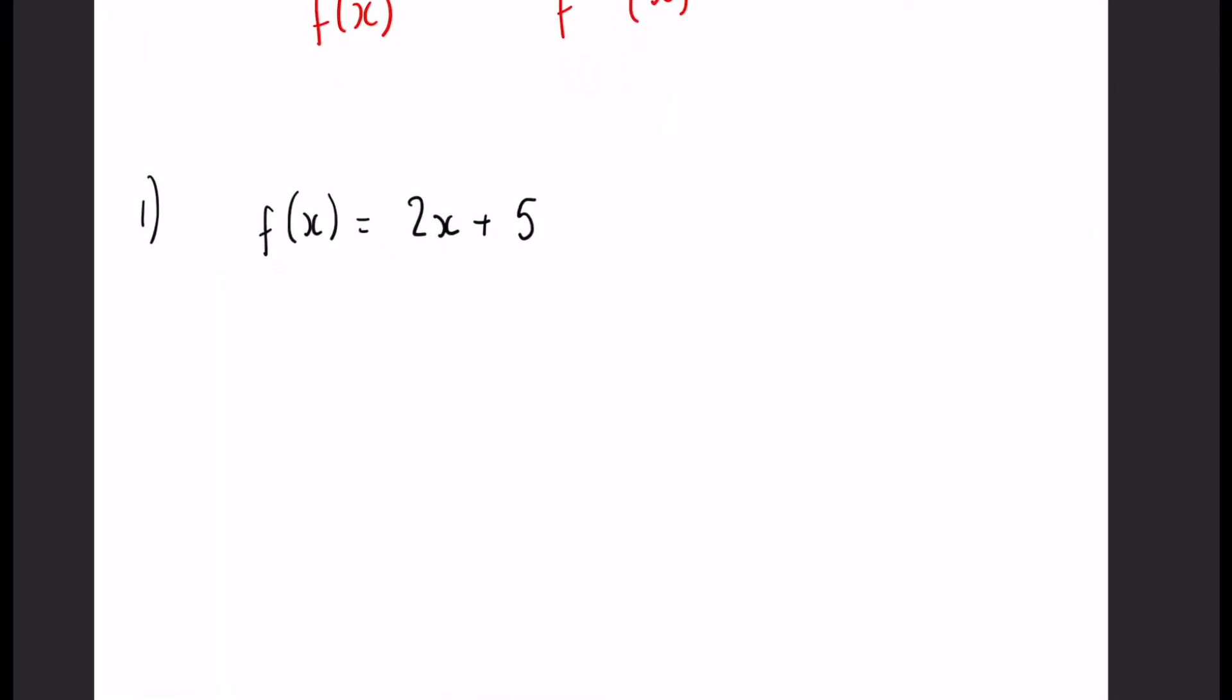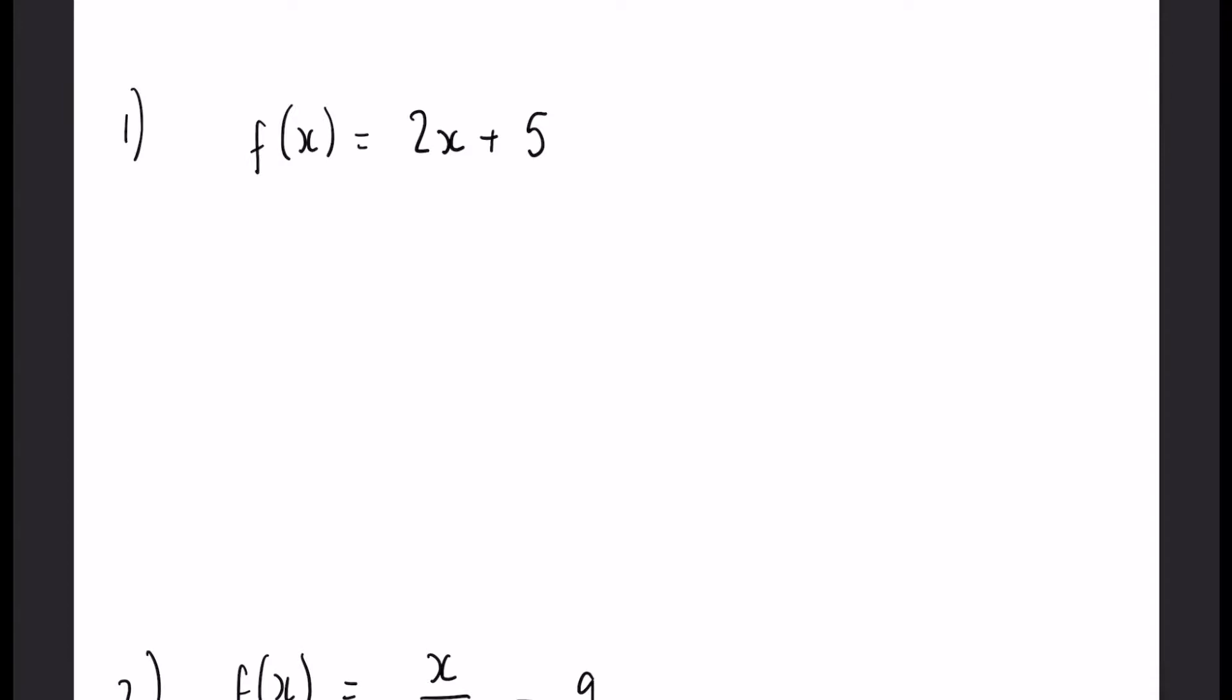For example, question 1, f of x equals 2x plus 5. We've started with the x, you've multiplied it by 2, you've added 5, and you've ended up with f of x.